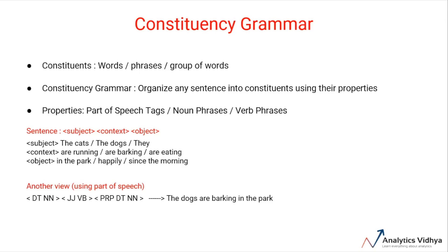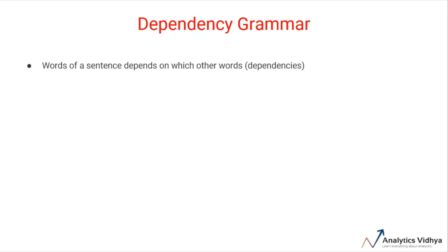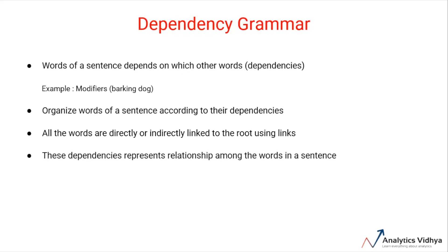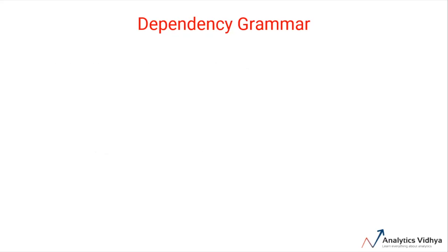A different type of grammar is dependency grammar, which states that words of a sentence are dependent upon other words of the sentence. For example, in the last sentence, barking dog was mentioned, and dog was modified by barking as the dependency adjective modifier relation exists between the two. Dependency grammar organizes the words of a sentence according to their dependencies. One word in a sentence acts as a root and all other words are directly or indirectly linked to the root using their dependencies. These dependencies represent relationships among the words and are used to infer the structure and semantic dependencies between the words.